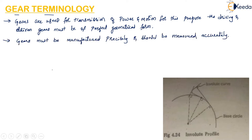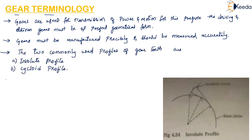There are two profiles for making the gear teeth which are commonly used, and they are the involute profile and the cycloid profile. The first one is the involute profile.